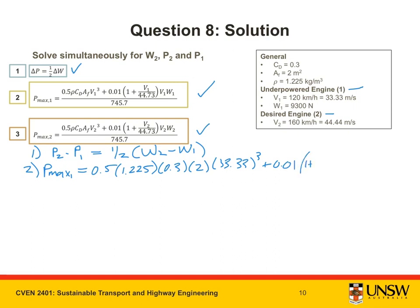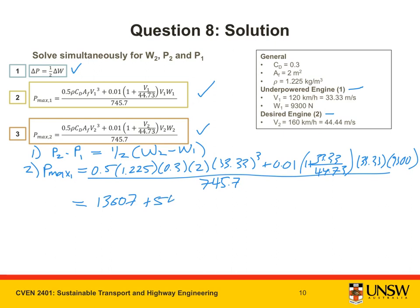This has to be summed by 0.01(1 + V₁/44.73), where V₁ is 33.33, times W₁, which is 9300. This is all over 745.7. Putting this into my calculator, I get (13607 + 5409.4)/745.7, which is 25.5 horsepower.